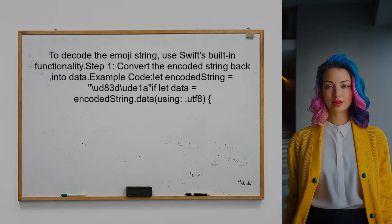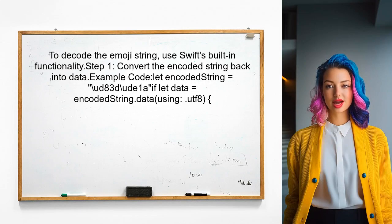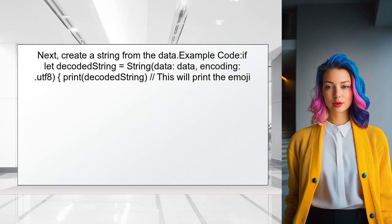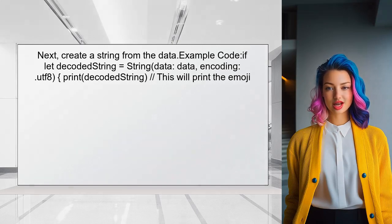To decode the emoji string, you can utilize the built-in functionality of Swift. First, you need to convert the encoded string back into data using UTF-8 encoding. Next, create a string from the data using the appropriate encoding. This will allow the emoji to be properly represented in the string format.